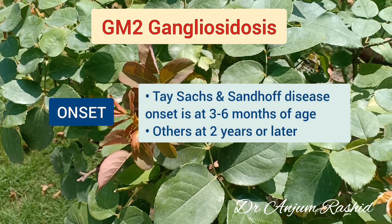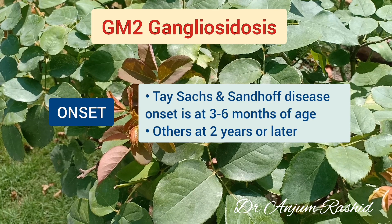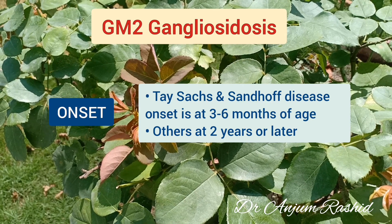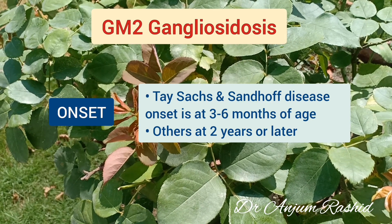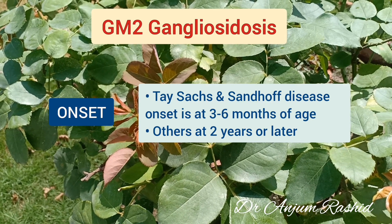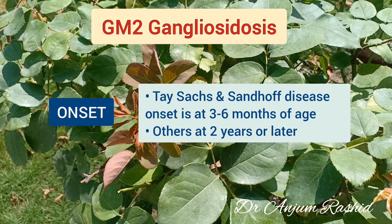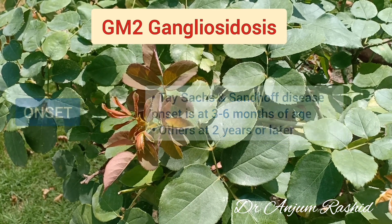Tay-Sachs and Sandhoff disease onset is at 3 to 6 months of age, while the other forms present at 2 years or later.